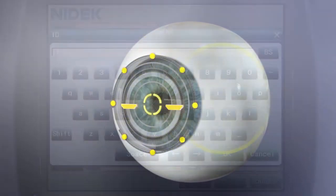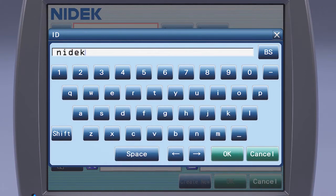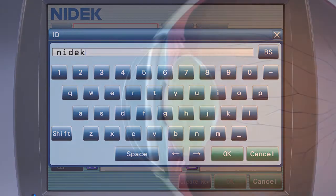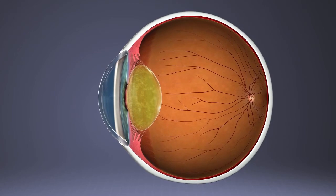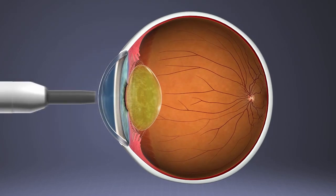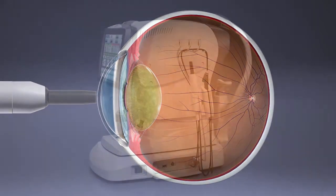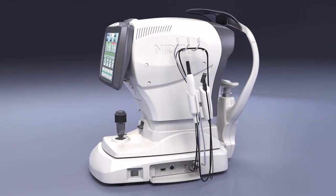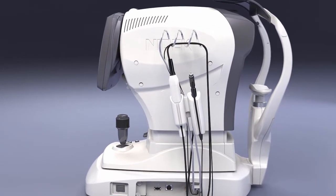The AL scan includes a convenient touch screen for a comfortable workflow and easy data entry. For rare cases when the optical biometer is unable to measure axial length, an optional built-in ultrasound biometer is available, saving you money and saving valuable office space in your practice.